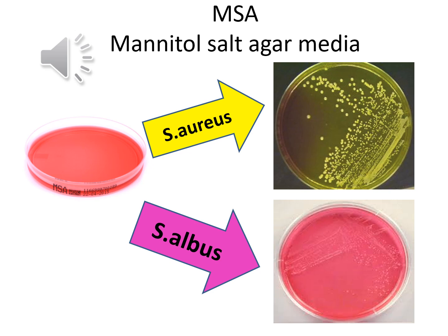Mannitol salt agar is a selective and differential medium. The high concentration of salt, 7.5%, selects for members of the genus Staphylococcus since they can tolerate high saline levels; organisms from other genera may grow but typically grow very weakly. It also contains the sugar mannitol and the pH indicator phenol red. If an organism ferments mannitol, an acidic by-product causes the phenol red to turn yellow. Staphylococcus aureus will ferment mannitol and turn the media yellow, while other Staphylococcus species such as albus and epidermidis will not ferment mannitol and the media will remain red.